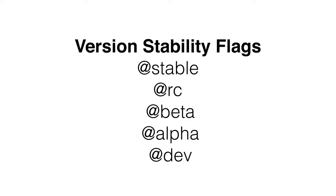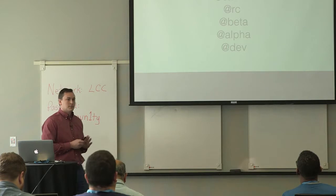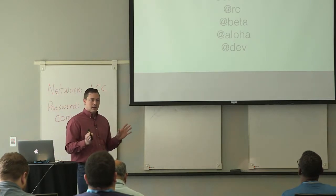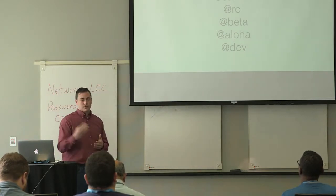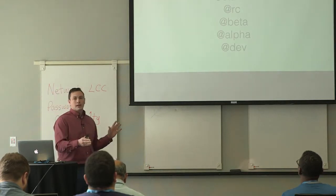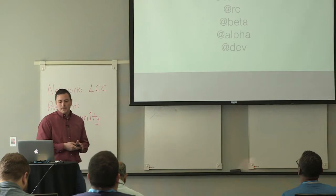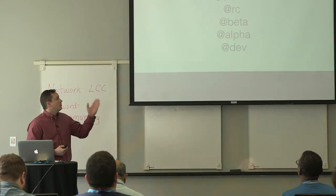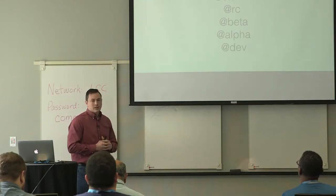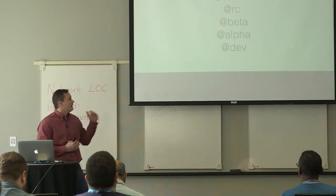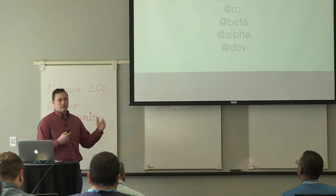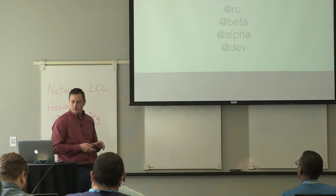You can also use stability flags. Instead of specifying an exact version, you can just say you want a package at 'stable', which based on semantic versioning will get the most recent stable version. You can also use RC (release candidate), beta, alpha, or dev — which is the loosest option and will give you whatever is most recent regardless of stability.